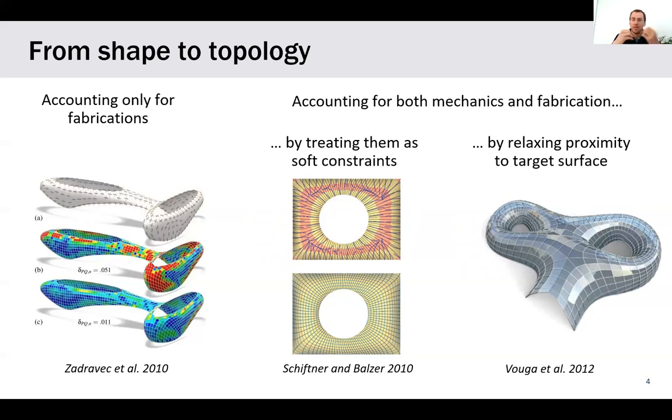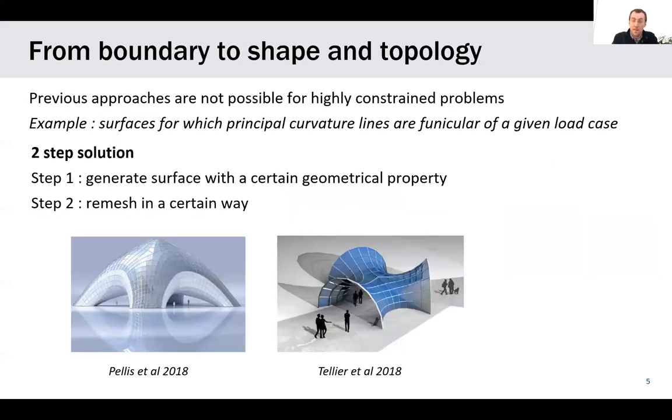you will align your patterns with conjugate nets on the surface. Now if you want to have, at the same time, mechanical efficiency and fabrication properties, you get into problems that are quite constrained. You'll often need to relax the properties you want, having panels that are not exactly planar or not following exactly the stress lines on your surface.